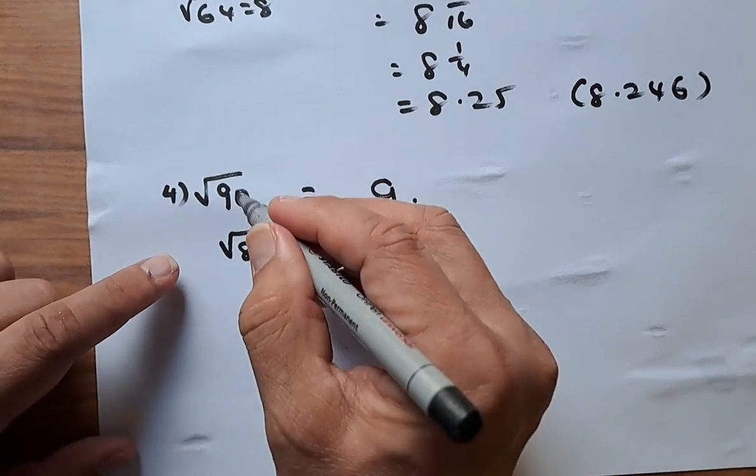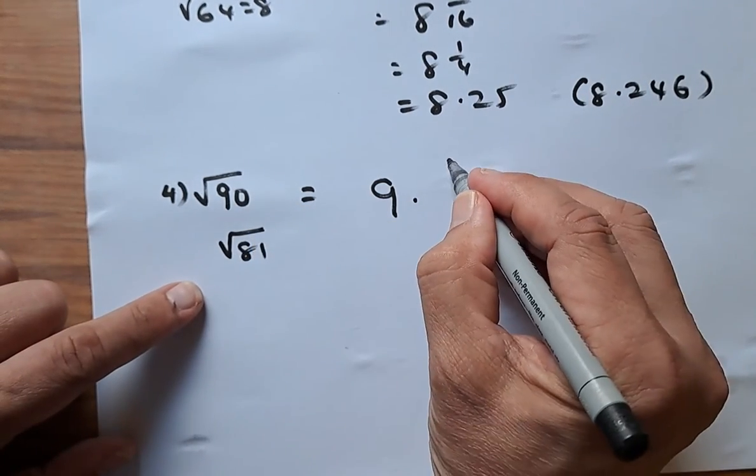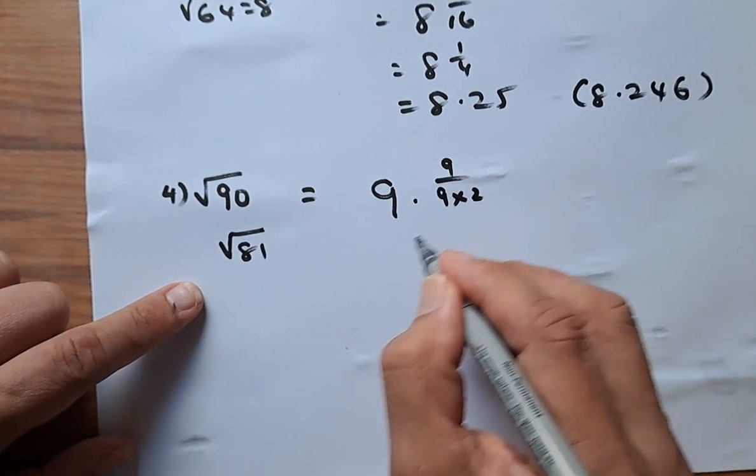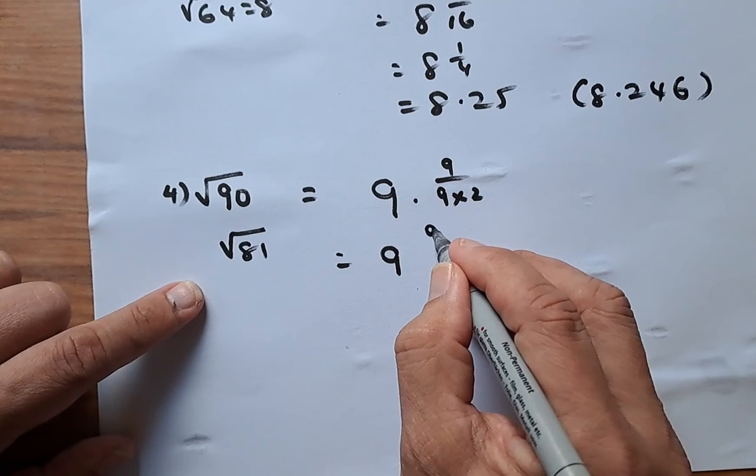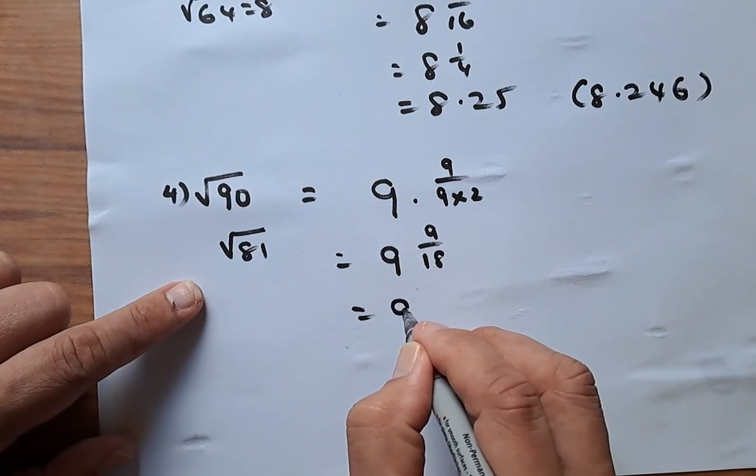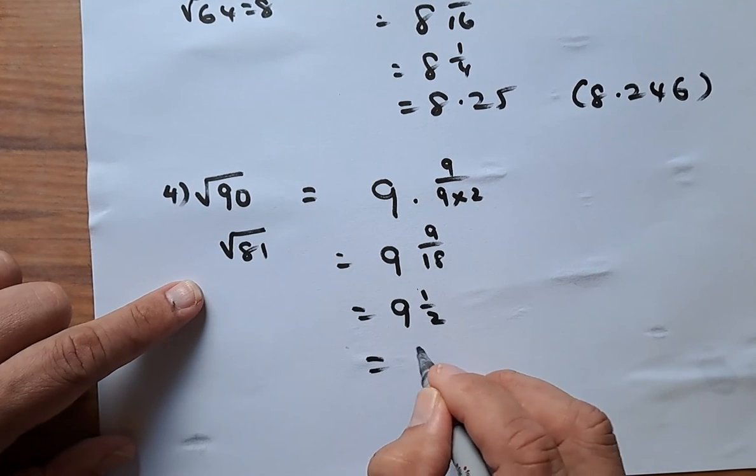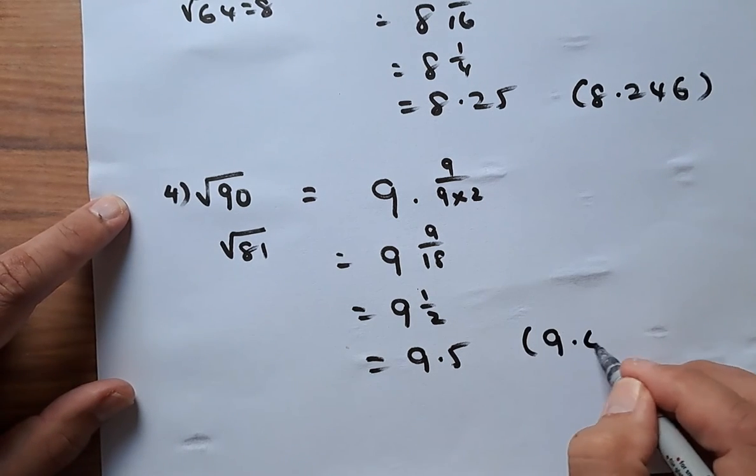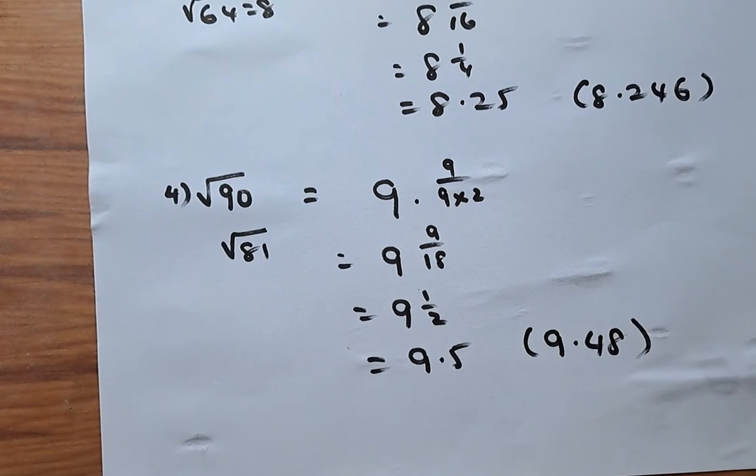So the step again: you find the difference, 90 minus 81 is going to be 9, and then you are going to double this number, 9 times 2. So it's going to be 9 over 18, or 9 and a half, and the answer is 9.5. And the calculator answer for this was 9.48, which is also very close.